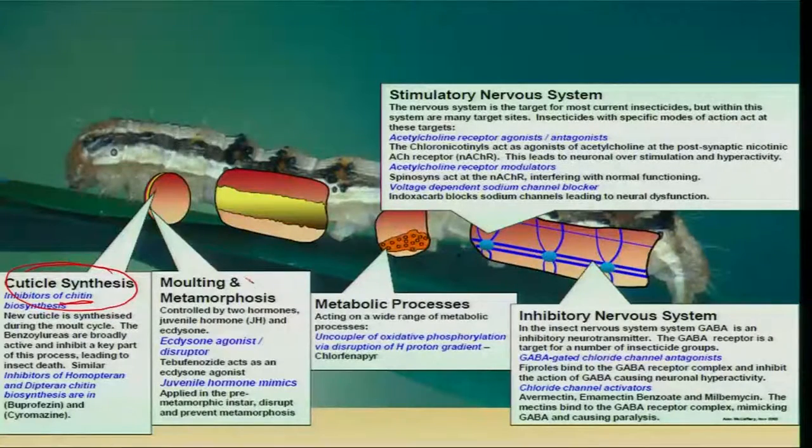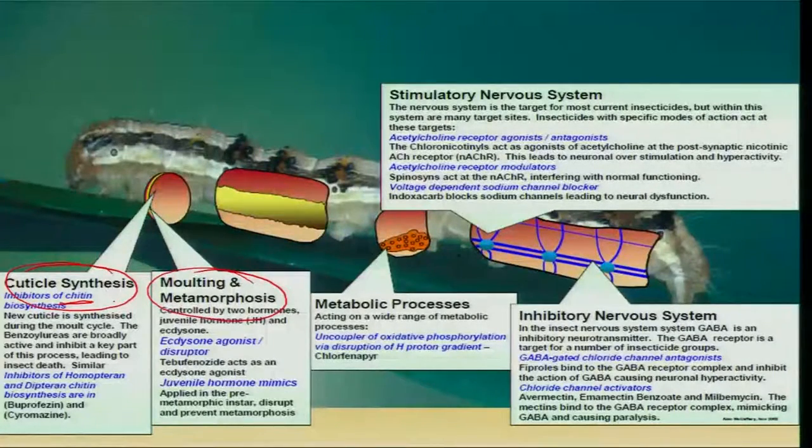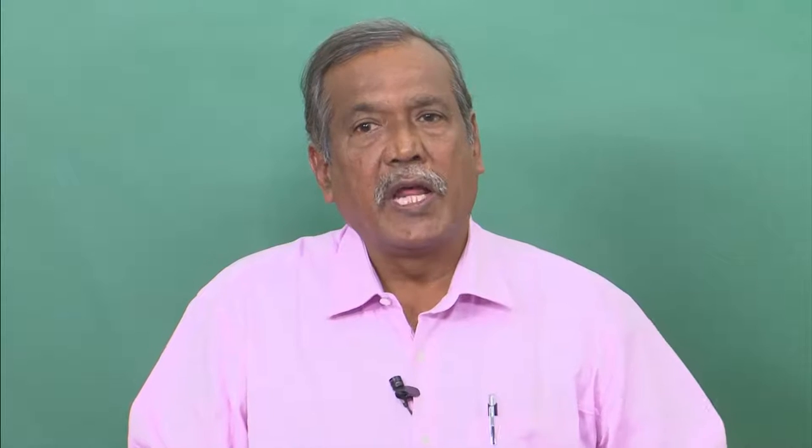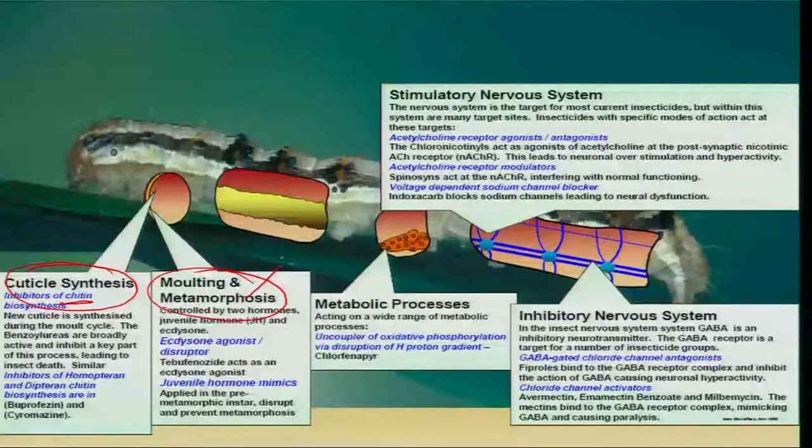In the second case, insecticides mainly interfere in molting and metamorphosis. During molting, ecdysone hormone is needed; during metamorphosis, juvenile hormone is needed. Juvenile hormone maintains the juvenility of the insect, while molting hormone helps in digesting the old cuticle and forming a new cuticle. When these two hormones are interfered with by antagonistic chemicals, the growth and development of the insect is affected. Insecticides affecting this belong to this category of mode of action.